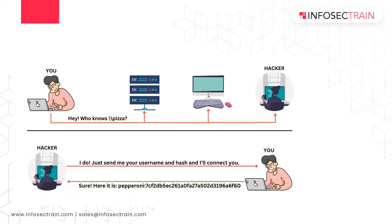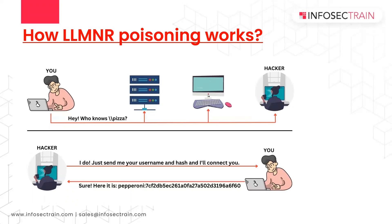Now, how can this protocol be poisoned? Let's say a victim is requesting access to a shared folder or shared drive, but the DNS can't connect to it because it doesn't exist. The server replies that it cannot connect, so the victim multicasts the request to the whole network. An attacker can then spoof as an authoritative source by responding to this multicast request, pretending to know the identity of the shared drive, and in turn requests the victim's NTLM hash. Once the attacker has the hash, the attack is complete.